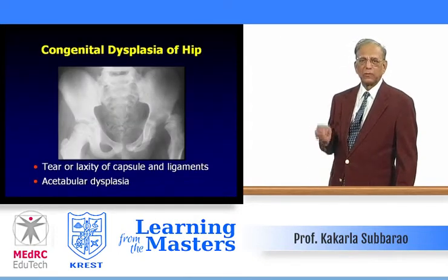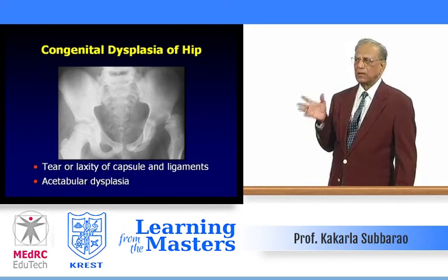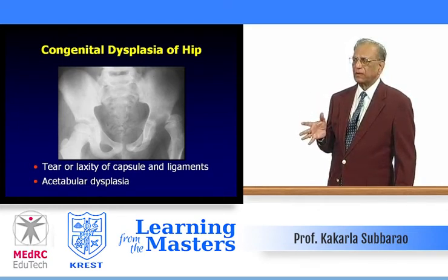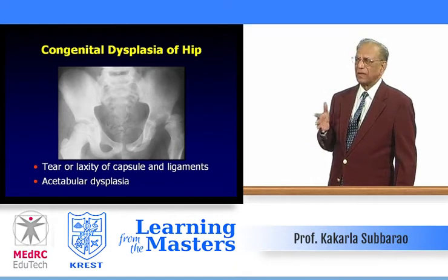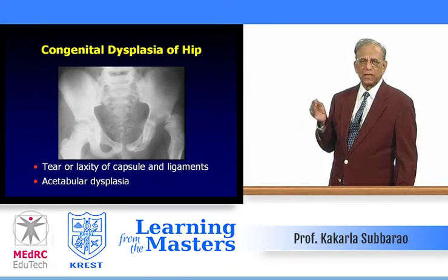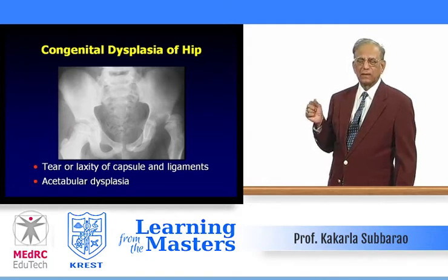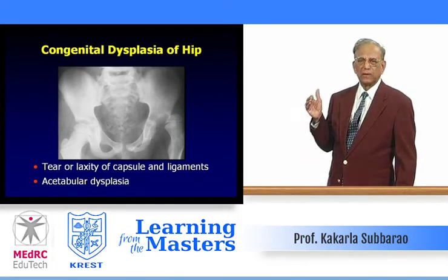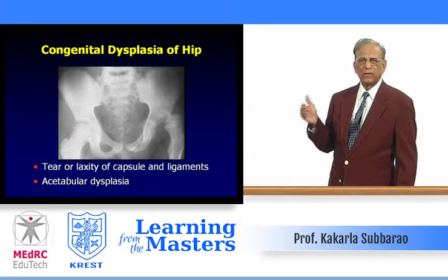Congenital dysplasia of the hip with dislocation — the etiology is dysplasia. The factors include laxity of the capsule and ligaments and primary acetabular dysplasia. Many say it is a secondary dysplastic acetabulum, but pathologically and clinically, as one observes the fetus from childhood, there is acetabular dysplasia and secondary dislocation of the hip of varying degrees.